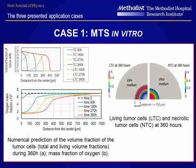On the upper left, we see the evolution of the viable rim and of the necrotic region. The plot below that shows oxygen concentration. On the right side is the distribution of the living tumor cells and of the necrotic cells after 360 hours. There is no sharp interface between the two cell types.